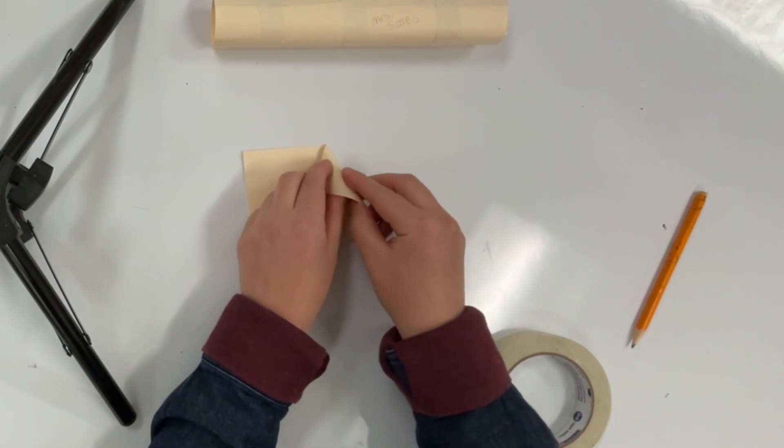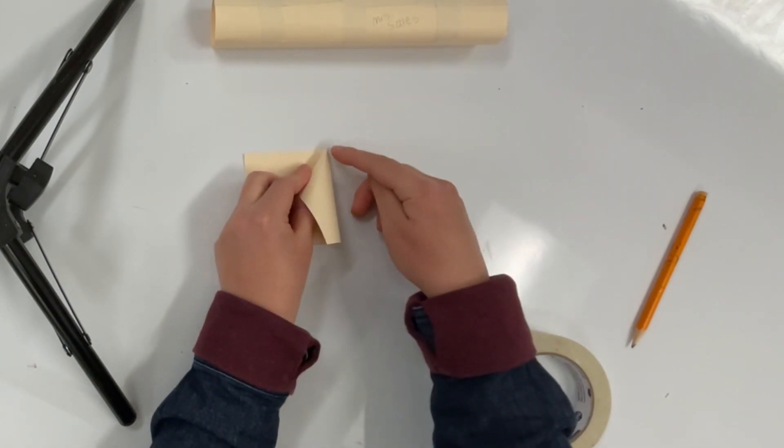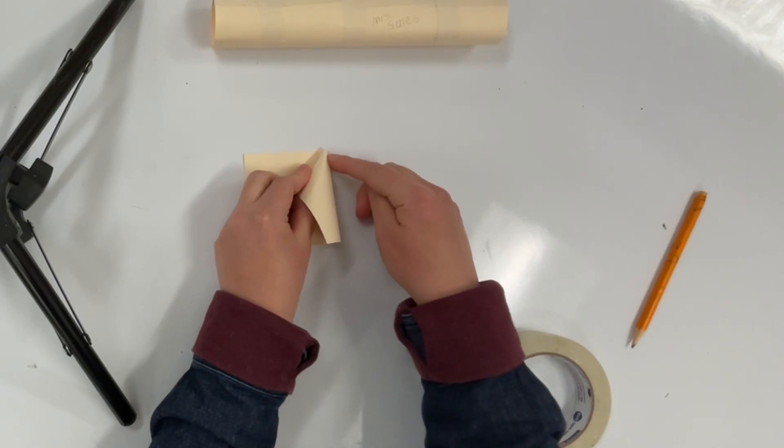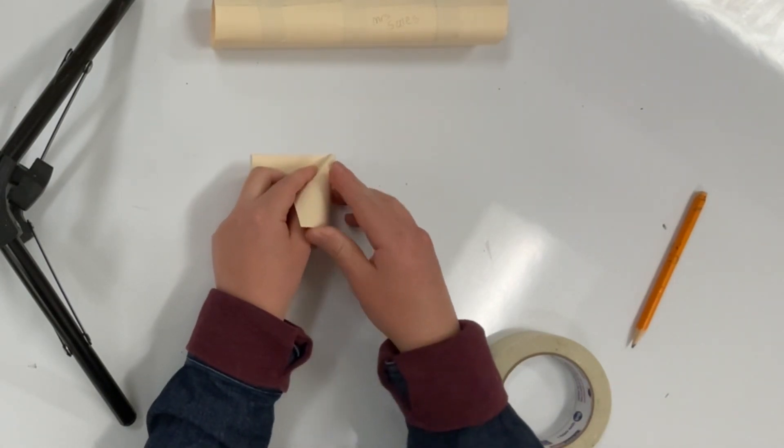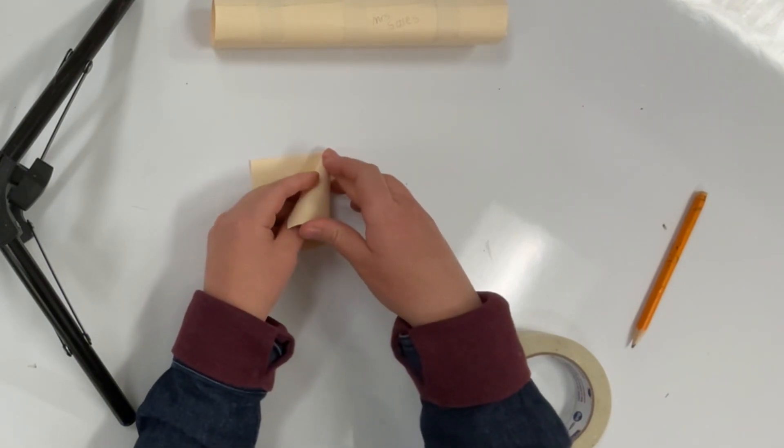Don't worry so much about the bottom part, it's going to be uneven. What we want is a nice pointy top to our cone. So you're going to roll the paper all the way. You got a nice pointy top and yeah, an uneven bottom—that's fine, we'll trim that off later.